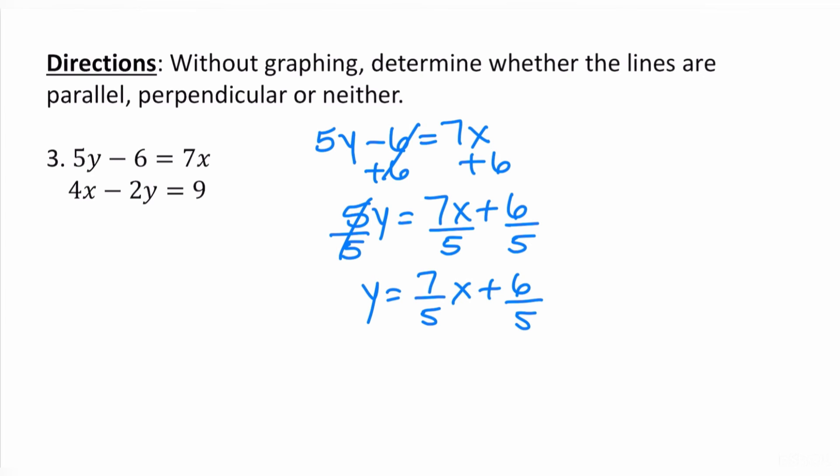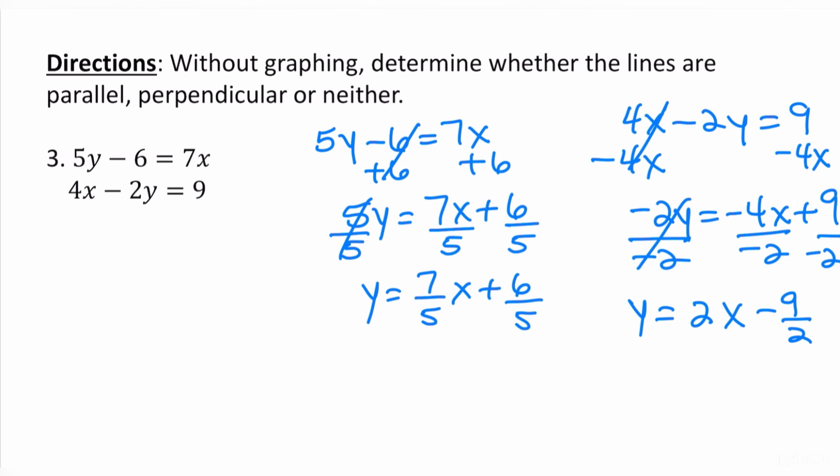My second equation is 4x minus 2y is equal to 9. Let's get the y by itself. So I subtract 4x from both sides. Negative 2y equals negative 4x plus 9. Divide everything by negative 2. So I get y is equal to negative 4 divided by negative 2 is positive 2x minus 9 over 2 or 4 and a half. It doesn't matter which way you write it.